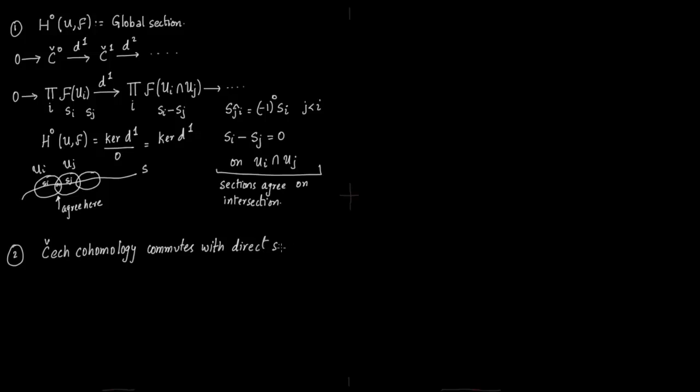The second important point is the Czech cohomology commutes with direct sums. So you have direct sum inside. Say you have these sheaves Fj where J is an element of some index set J and this direct sum comes out. There is nothing special about it. It just follows from the definition of Czech cohomology.